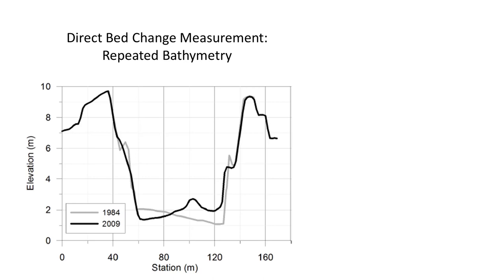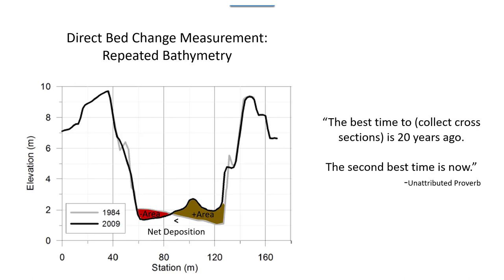Sometimes I tell people I would trade half the project budget for historic cross-sections, because as far as I know time machines are still really expensive — you can't go back and get those cross-sections and there's no amount of analysis you can do to reproduce them. There's an aphorism: the best time to plant a tree is 20 years ago; the second best time is today. The same is true about cross-sections on sediment-problematic systems. If you want to give your future self a gift, try to find time and budget to get cross-sections now, so that when someone is asked to analyze the system in five or ten years, you've already given them cross-sections to reoccupy.